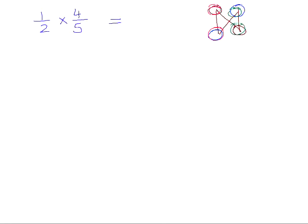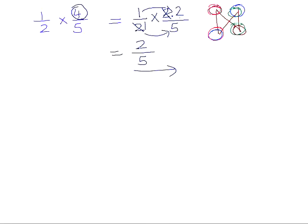So here, if we look at a half times 4 over 5, that's 1 over 2 multiplied by — 4 can be rewritten as 2 times 2 using prime factors. We can then divide that 2 by that 2, leaving 1 times 2. Now we multiply what's left in the numerator by what's left in the denominator: 1 times 2 over 1 times 5, which is 2 over 5.